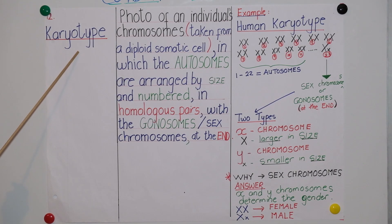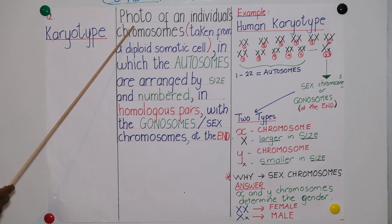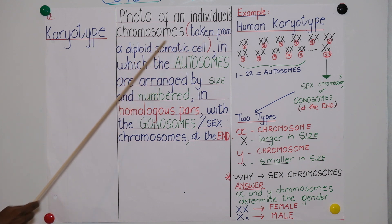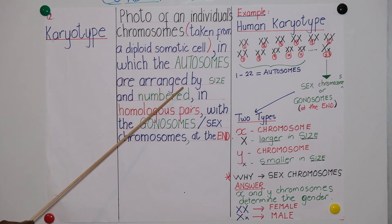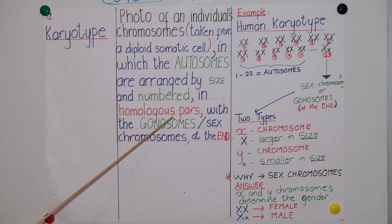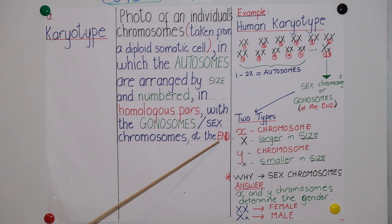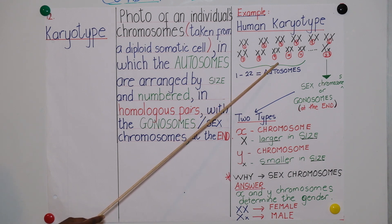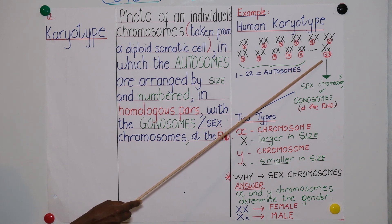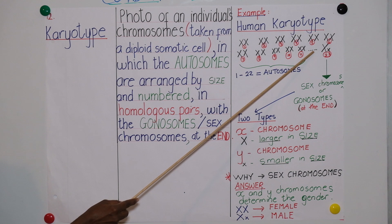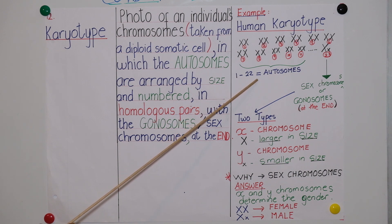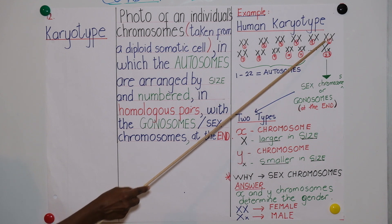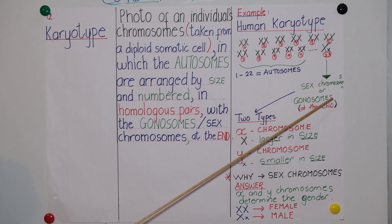The next concept is karyotype. What is a karyotype? It is a photo of an individual's chromosomes taken from a diploid somatic cell, in which the autosomes are arranged by size and numbered, with the gonosomes — also referred to as sex chromosomes — identified at the end of the photo. This picture shows an example of the human karyotype, because it has 23 pairs of homologous chromosomes. This dotted line represents chromosomes that are missing due to lack of space. The first 22 pairs are called autosomes.